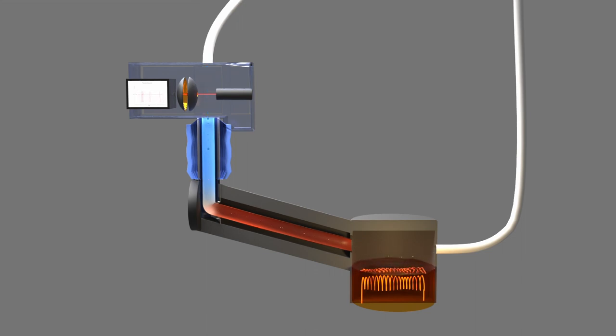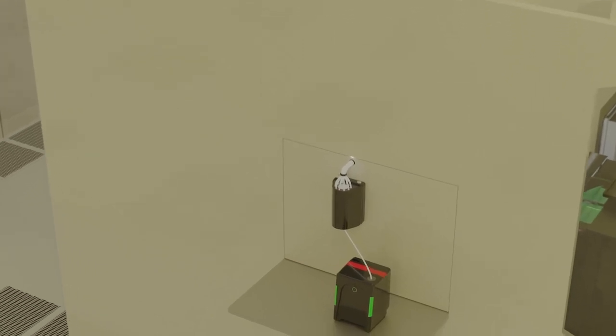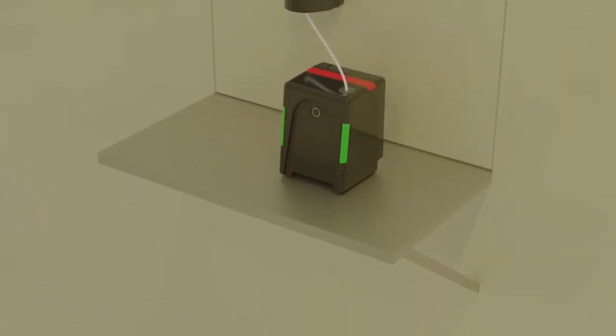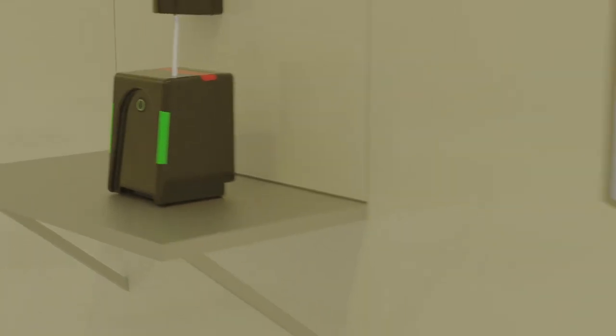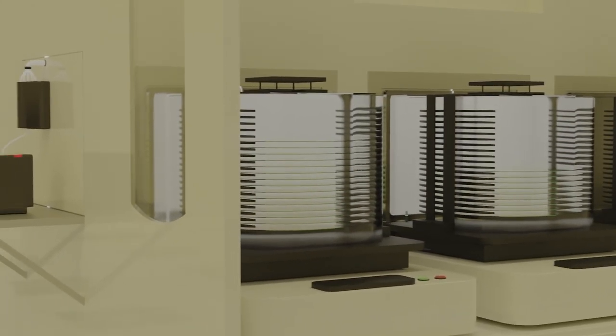The NanoAir 10 from Particle Measuring Systems uses CPC technology to enable the detection of airborne particles as small as 10 nm. With a 0.1 CFM sample flow rate and an industry-leading false count rate below 1.5 particles per cubic meter, the instrument has been developed specifically to enable nanoparticle contamination to be detected within cleanrooms and other ultra-clean environments.